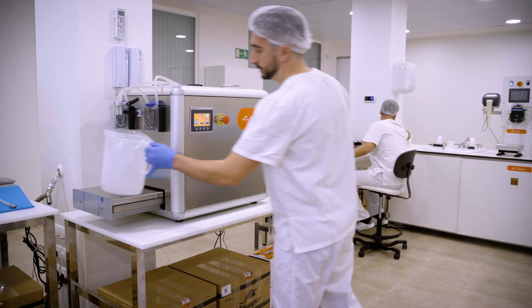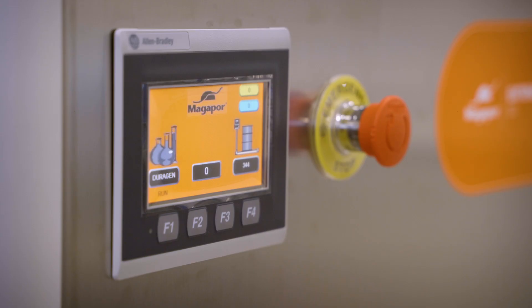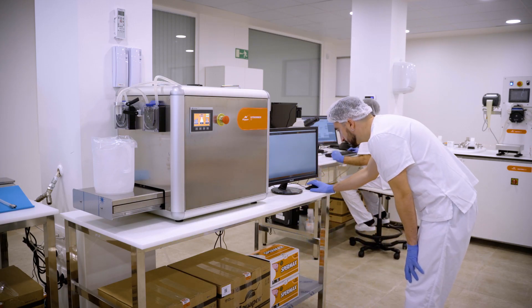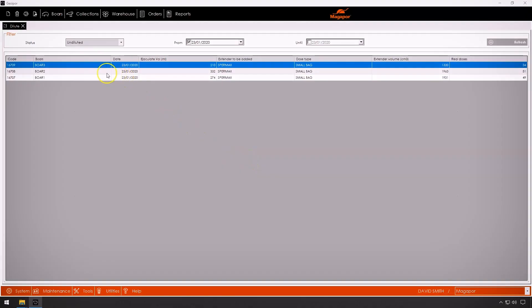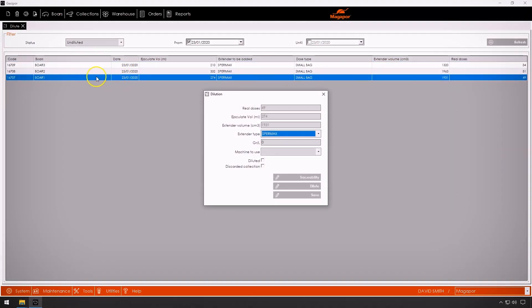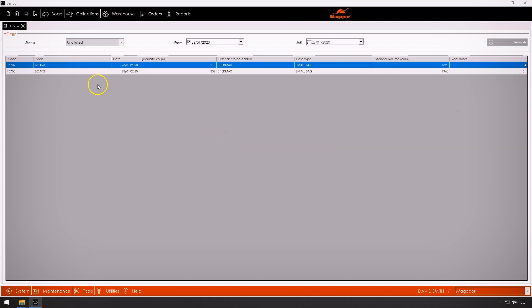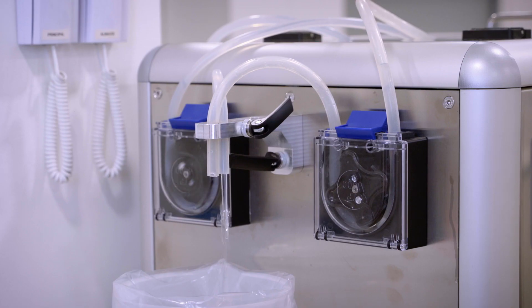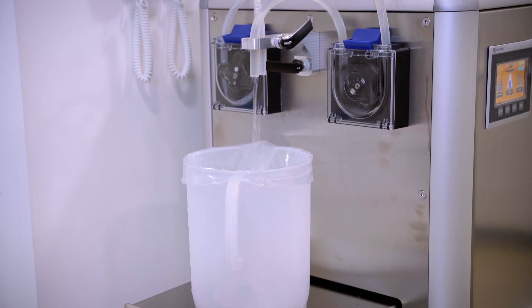For the dilution process, Magapore has the Extender Box, the equipment that dispenses the precise volume of water and extender at the desired temperature. From the dilution section of Gesipor, we see the ejaculates we have in the dilution queue or those already diluted. Once the ejaculate that we want to dilute is selected, we will proceed to the selection of the unit to send the work order, loading automatically the volume of extender.